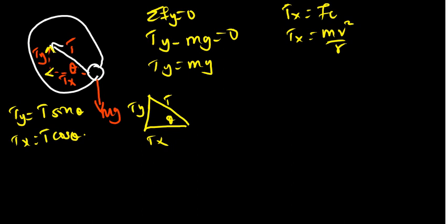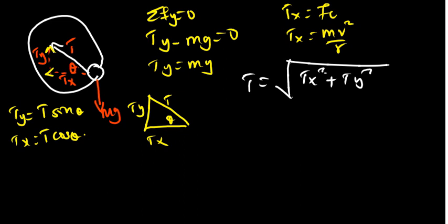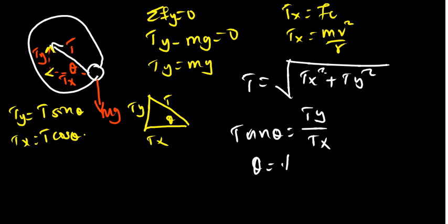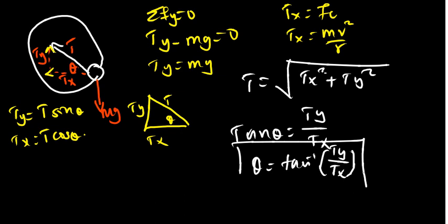Using Pythagoras' theorem: T equals the square root of Tx squared plus Ty squared. We can calculate Tx using mv squared over r, and Ty using mg. We can also find the angle using tan theta equals opposite over adjacent, which is Ty over Tx, so theta equals tan inverse of Ty over Tx.